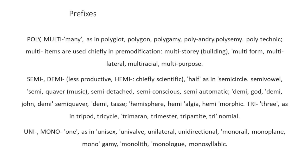'Tri-' means 3, as in 'tripod,' 'tricycle,' 'trimural,' 'trimester,' 'tripartite,' 'trinomial.' 'Uni-' or 'mono-' means 1, as in 'unisex,' 'univalve,' 'unilateral,' 'unidirectional,' 'monorail,' 'monoplane,' 'monogamy,' 'monolith,' 'monologue,' and 'monosyllabic.'